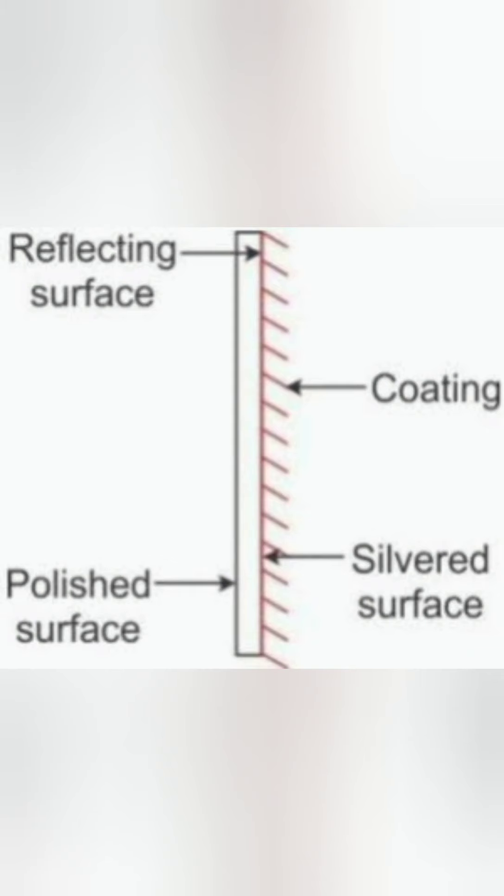A plain mirror is made by silvering one side of a thin plain glass plate. The surface on which silvering is done is called the silver surface, while the other surface of glass plate is called the reflecting surface from where the light is reflected. The silvered surface is coated with some opaque material so as to safeguard the silvering on it.